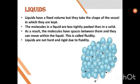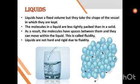The next state is liquids. Liquids have a fixed volume but they take the shape of the vessel in which they are kept. Unlike solids, liquids do not have their own fixed shape, but they do have their volume. For example, water in a glass takes the shape of the glass; if you pour it in a jug it takes the shape of a jug. The molecules in liquid are less tightly packed compared to solid — loosely packed — so the molecules have spaces and can move within the liquid. This property is called fluidity, and due to fluidity, liquids are not hard and rigid.